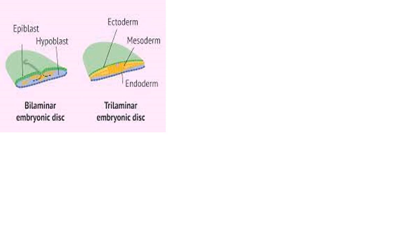This is the bilaminar embryonic disc, from which we say that the primordial germ cells are derived from the epiblast. You have the epiblast and the hypoblast. Due to a process called gastrulation, a trilaminar embryonic disc is formed in which you form the ectoderm, the mesoderm, and the endoderm. So the primordial germ cells are derived from either the epiblast or the ectoderm.